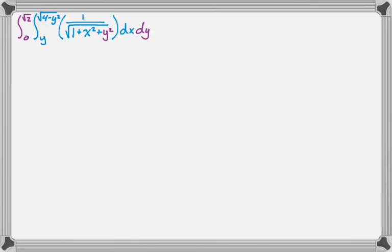So we have the integral from 0 to radical 2, from y to radical 4 minus y squared of 1 over the quantity 1 plus x squared plus y squared, and then dx dy. So if you do enough of them, you look at that and you immediately think, this is definitely something I'm supposed to do in polar.